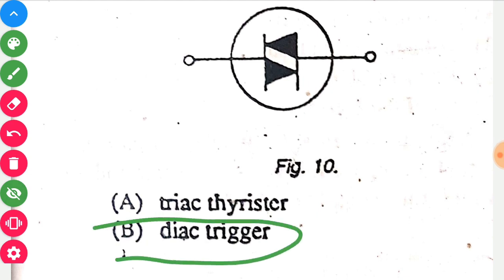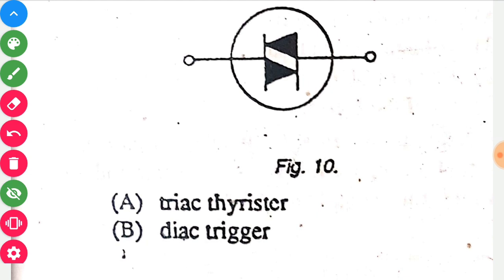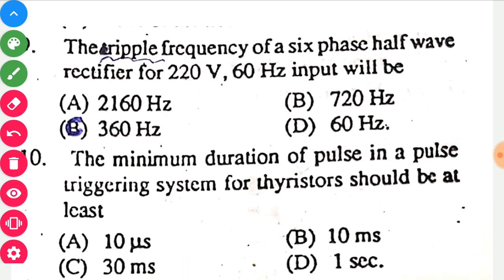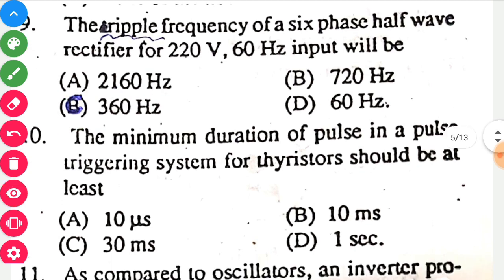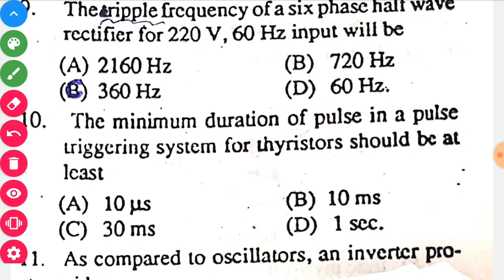The ripple frequency of a 6-phase half-wave rectifier for 220 volts, 60 Hz input will be 360 Hz. In half-wave rectification the frequency remains the same, so for six phases: 60 multiplied by 6 equals 360 Hz. For full-wave rectification the frequency would be multiplied by two.